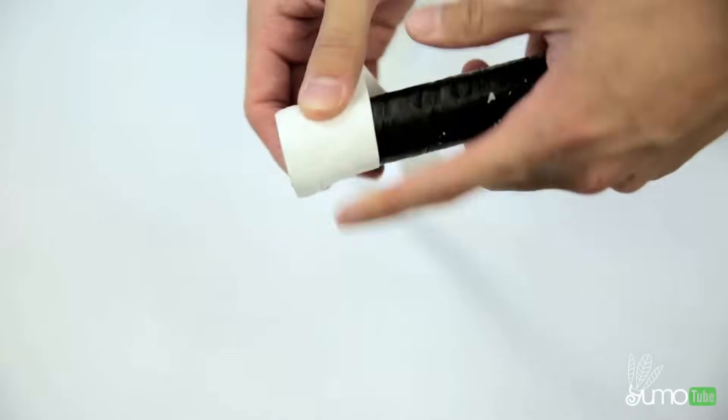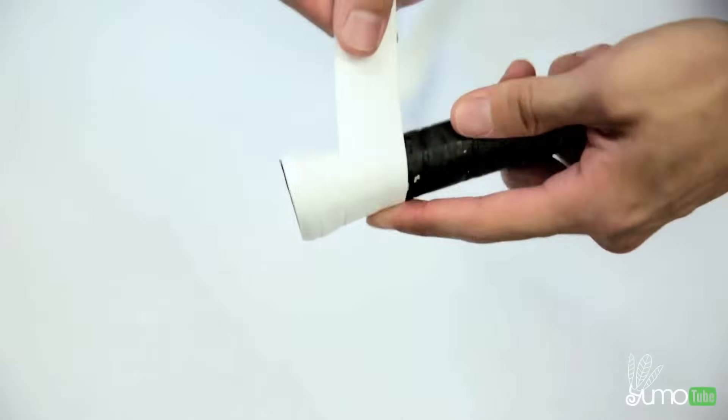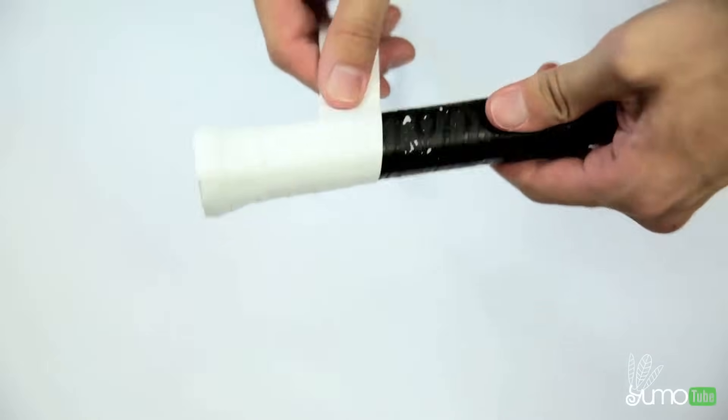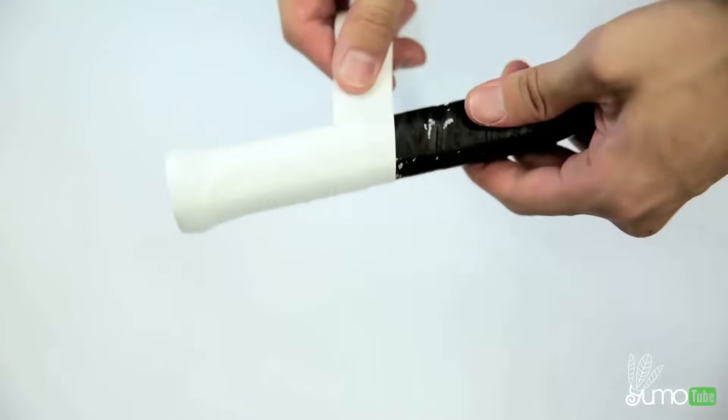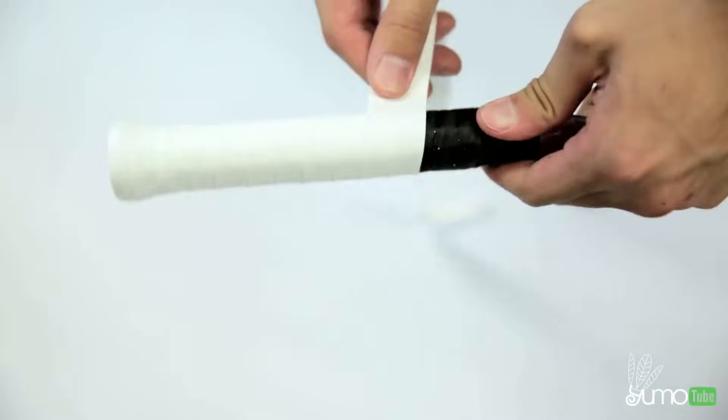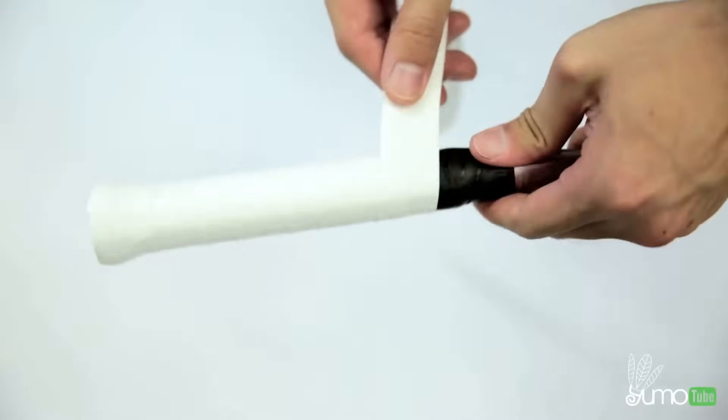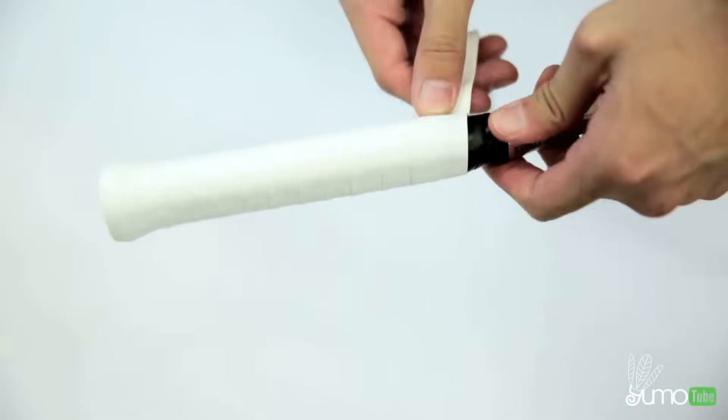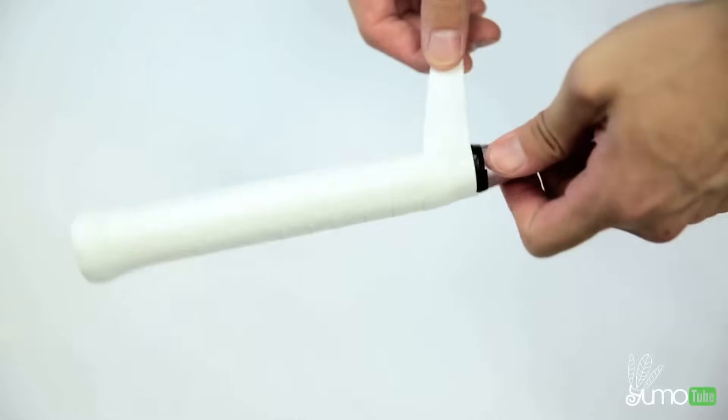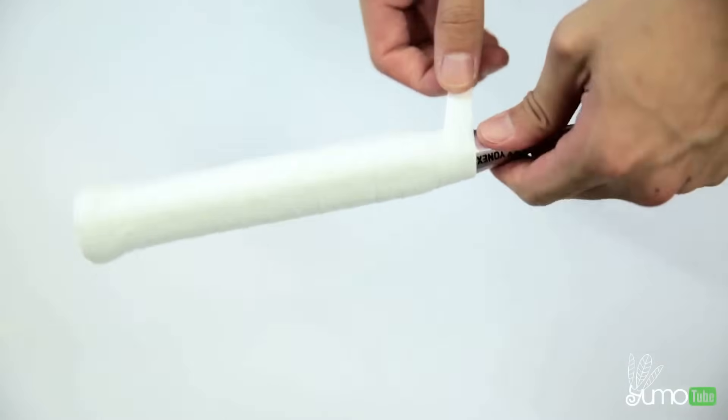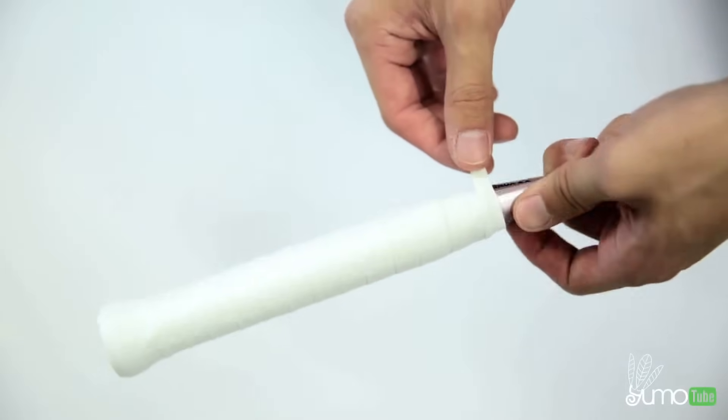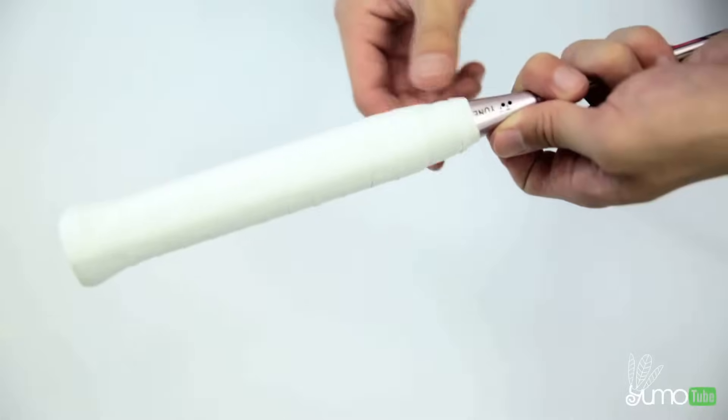And just like before, you would try to keep it evenly spaced and just keep going down the handle. Just like this. And as I mentioned before, if you do it this way you won't need to use the Yonex sticker, because there is an adhesive end here at the sharper end of the grip, the pointy end. And then you just finish by sticking it on. Just like that.